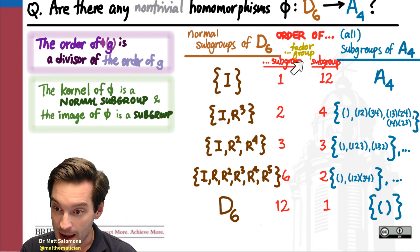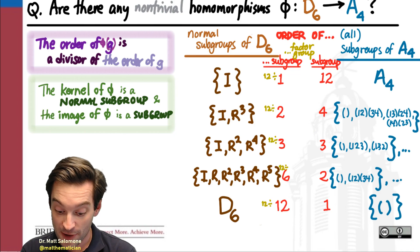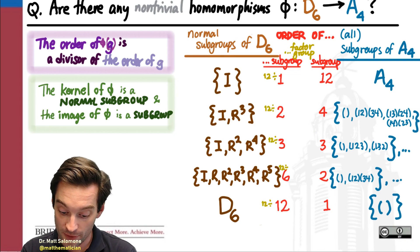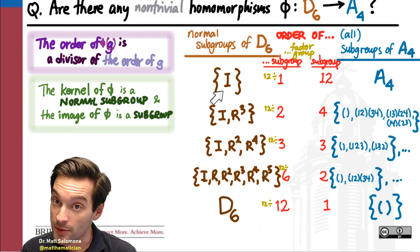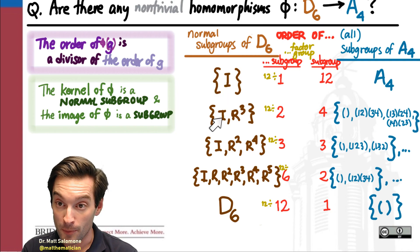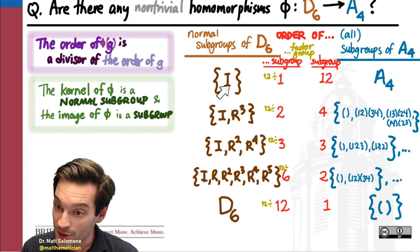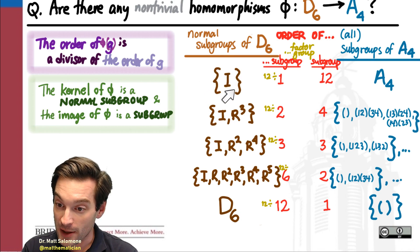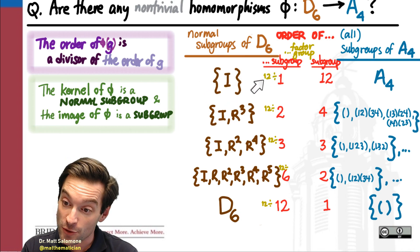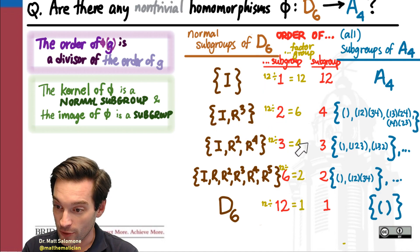Let's list the orders of the factor groups for these various normal subgroups of D6. Using Lagrange's theorem, we know that the number of cosets of this normal subgroup in D6 is just the order of the whole group divided by the order of the subgroup. So if the kernel were trivial, the factor group would have order 12 ÷ 1 = 12; then 6, 4, 2, and 1 for the other subgroups.